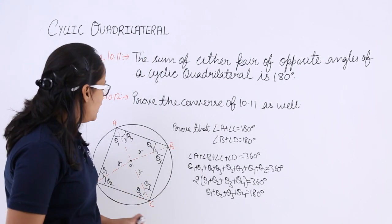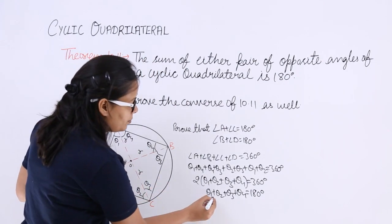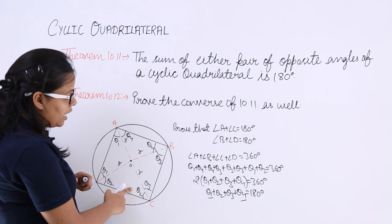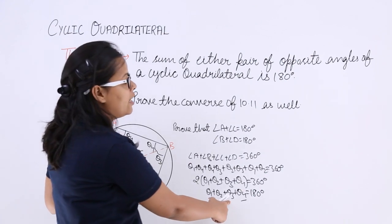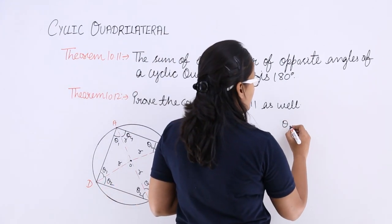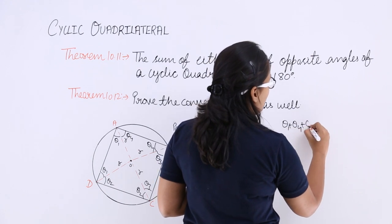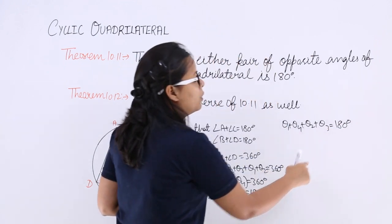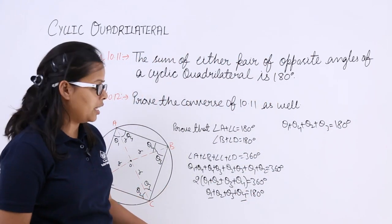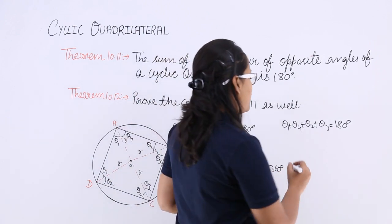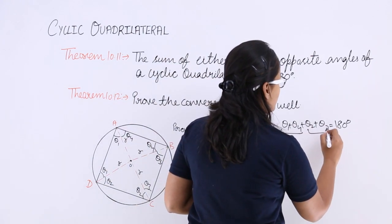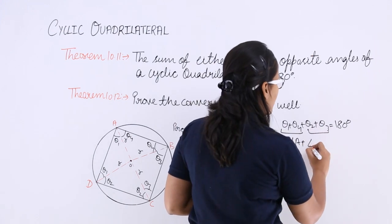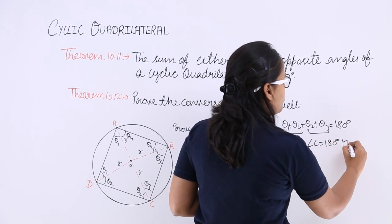Now, angle A is theta 1 plus theta 4, and angle C is theta 2 plus theta 3. So angle A plus angle C equals (theta 1 plus theta 4) plus (theta 2 plus theta 3), which equals 180 degrees. Hence proved.